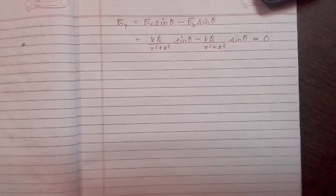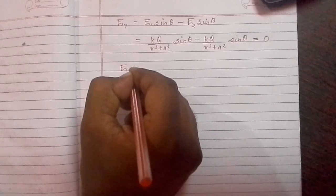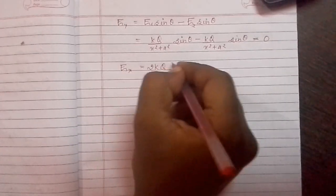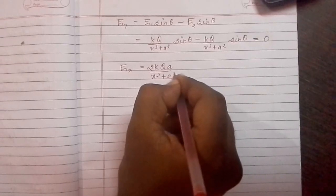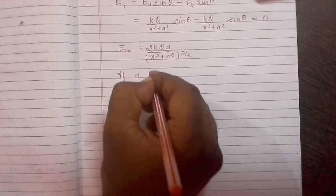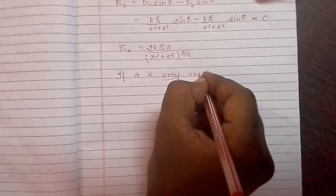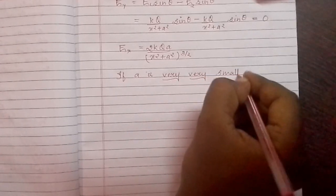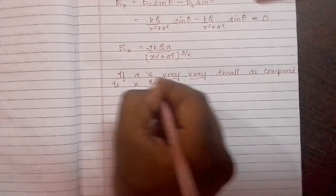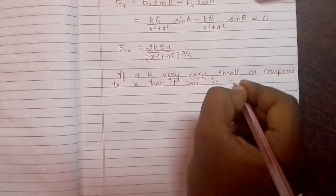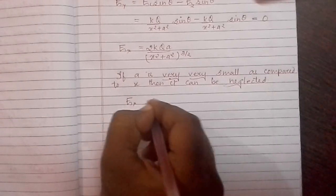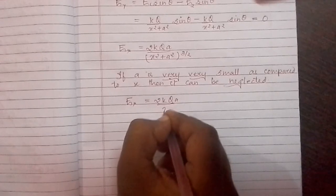So we can see the resultant electric field is only directed along the x-axis, which equals Ex equal to 2kqa divided by x squared plus a squared, to the power 3 by 2. If a is very very small compared to x, then a can be neglected. So our expression reduces to Ex equal to 2kqa divided by x cubed.